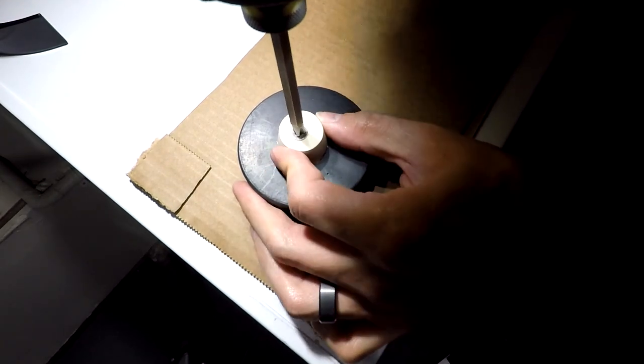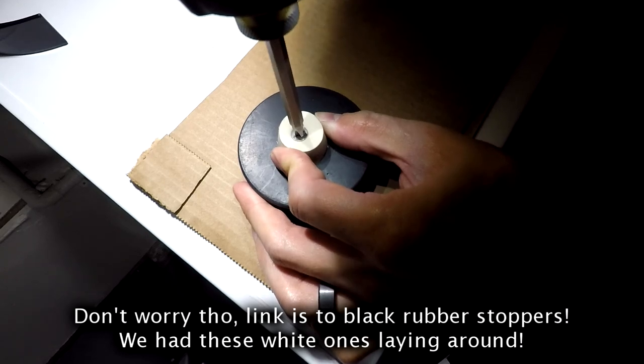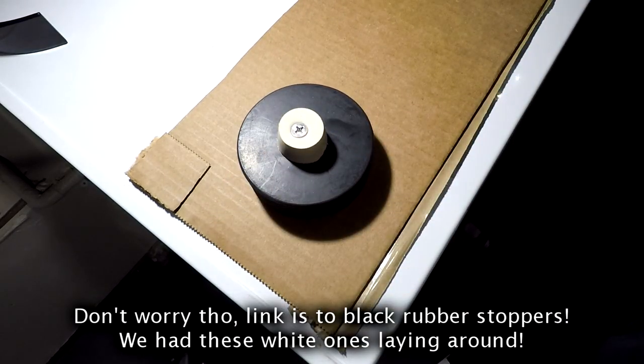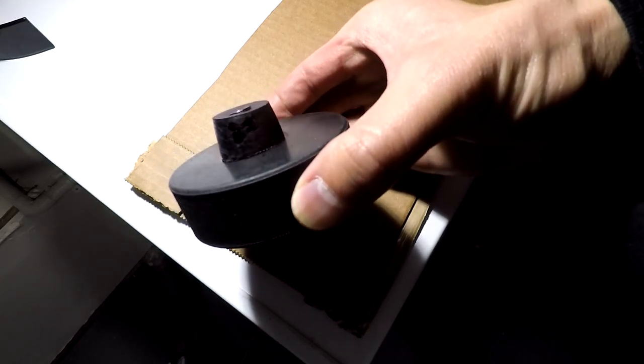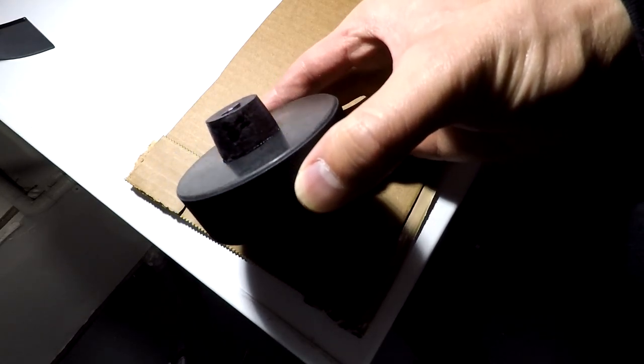And so the white really bothers me, so I'm going to actually Sharpie these things. I Sharpie them black so that way it looks a little bit nicer. And that's basically it. Once you screw it in, there's your DIY jack pad.